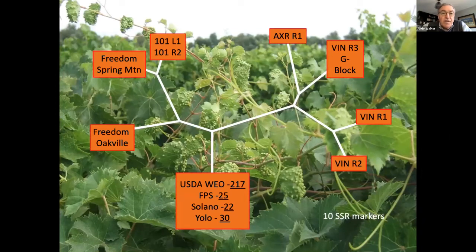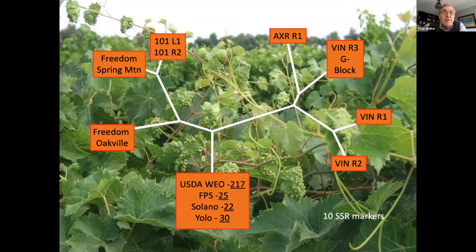We never had foliage phylloxera in California — that's almost true, it's been very rare until recently. About 15 years ago, we started getting calls from nurseries complaining about galls in the leaves, and lo and behold, there was phylloxera on these rootstocks that hadn't been there before. It's a pain — nurseries have to go through and control this. They either inject various insecticides or top spray them with systemic materials. If they don't, they lose 20 to 25 percent of their cuttings because they just don't generate very well.